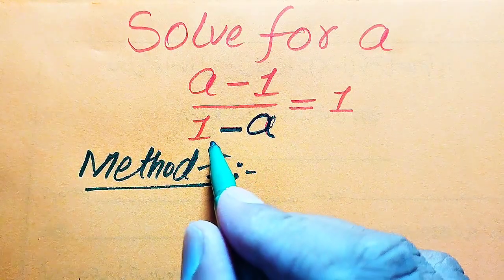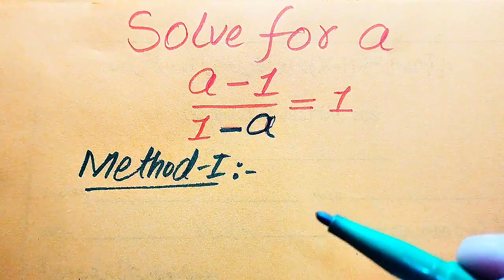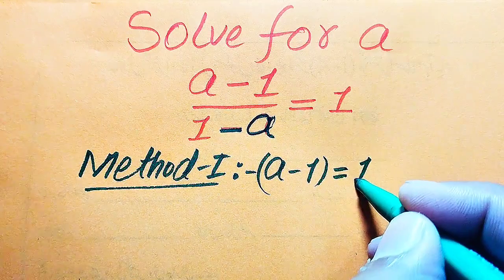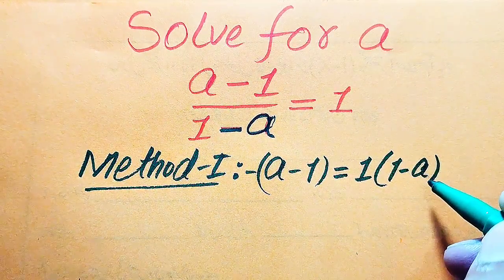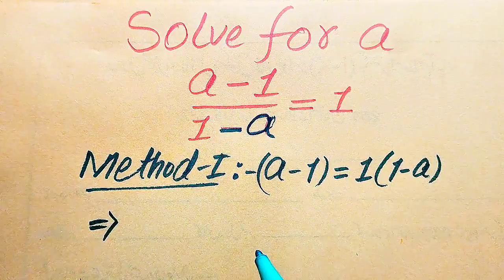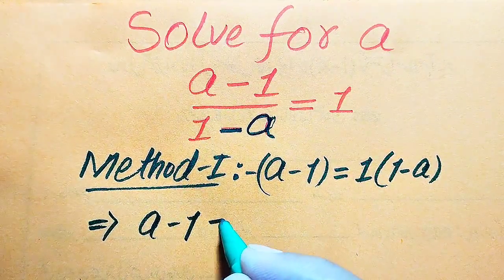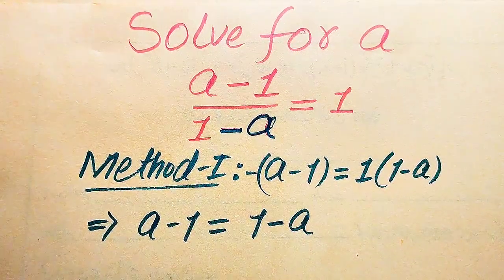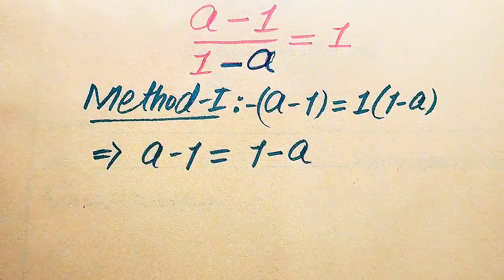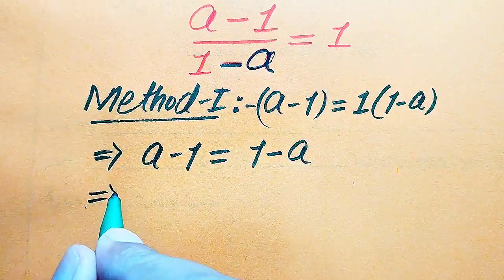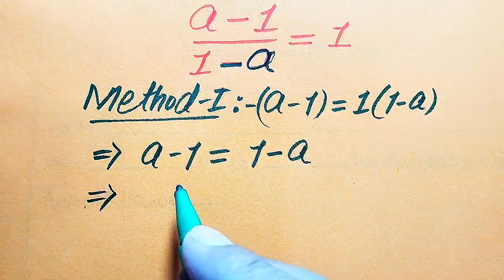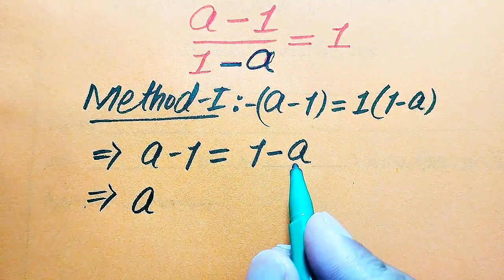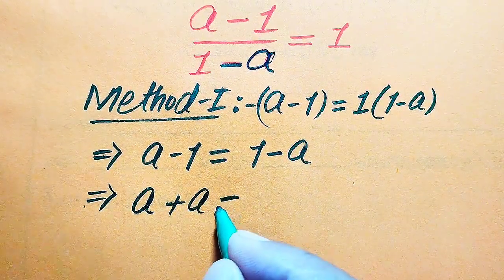Now we move towards the solution. First, we move (1 minus a) to the right-hand side, giving us: a minus 1 equals 1 times (1 minus a). Expanding, we get a minus 1 equals 1 minus a. Then we move the minus a from the right-hand side to the left-hand side, which becomes plus a.